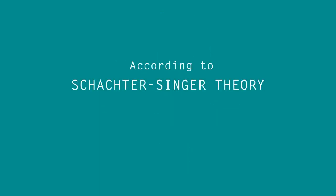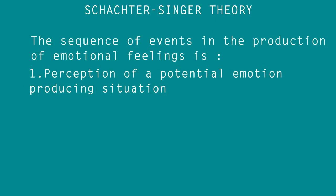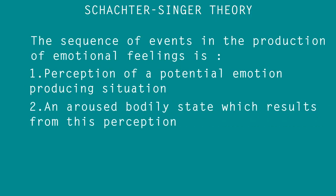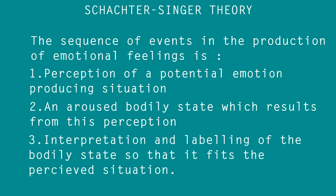According to Schachter-Singer's theory, the sequence of events in the production of emotional feeling is: 1. Perception of a potential emotion-producing situation. 2. An aroused bodily state which results from the perception and which is ambiguous. 3. Interpretation and labeling of the bodily state so that it fits the perceived situation.